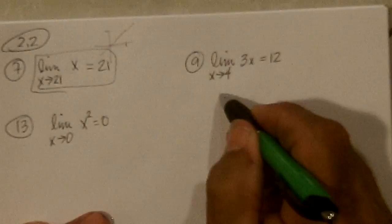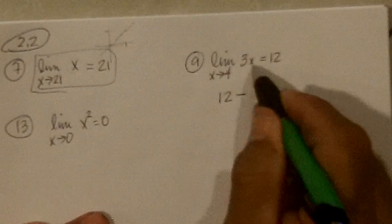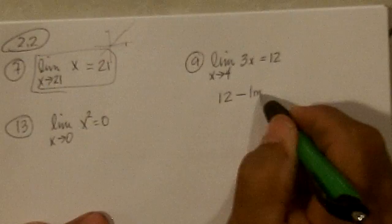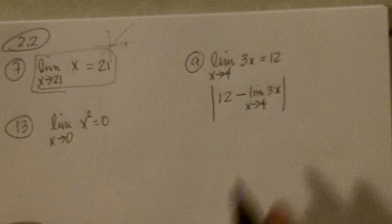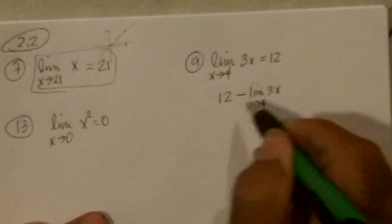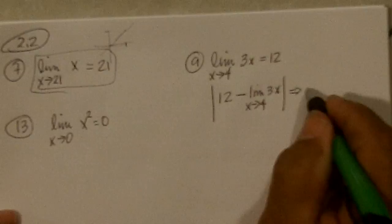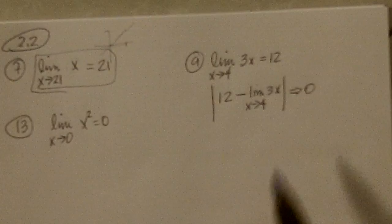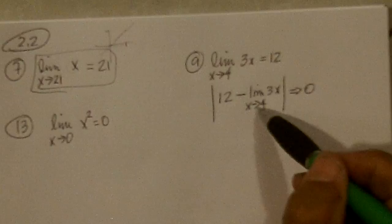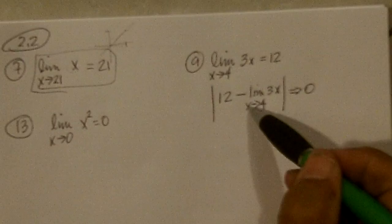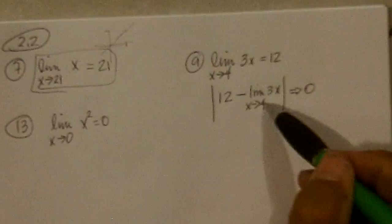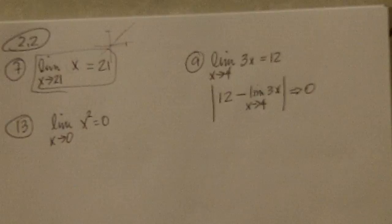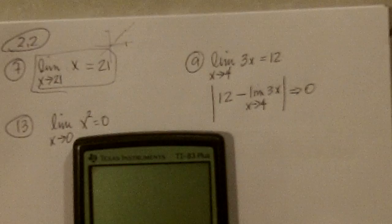if you take the limit, 12, and subtract this in absolute value and show that this goes to 0, then this would be the limit. So you're supposed to show that you can keep picking numbers closer to 4, and this will keep getting closer to 0.